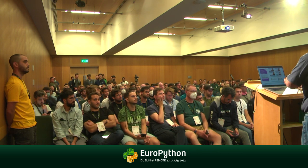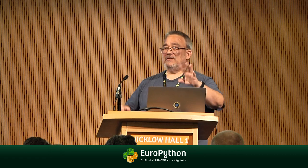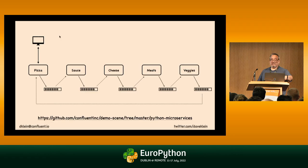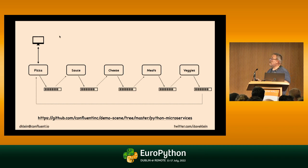One final observation: the current pizza pipeline is serialized, but you could redesign it so the pizza service posts to one topic and all the topping services — sauce, cheese, veggies — independently pick up from that same topic, do their work in parallel, write to their own topics, and then a separate aggregator pulls from all those topics to assemble the final result. That could be a lot more efficient and fun to build.